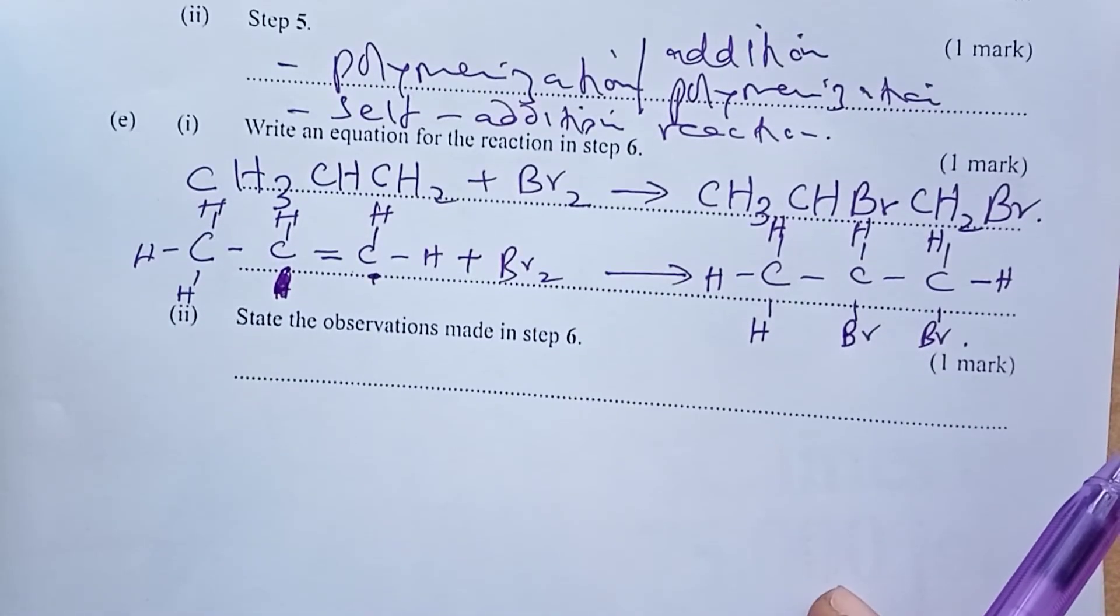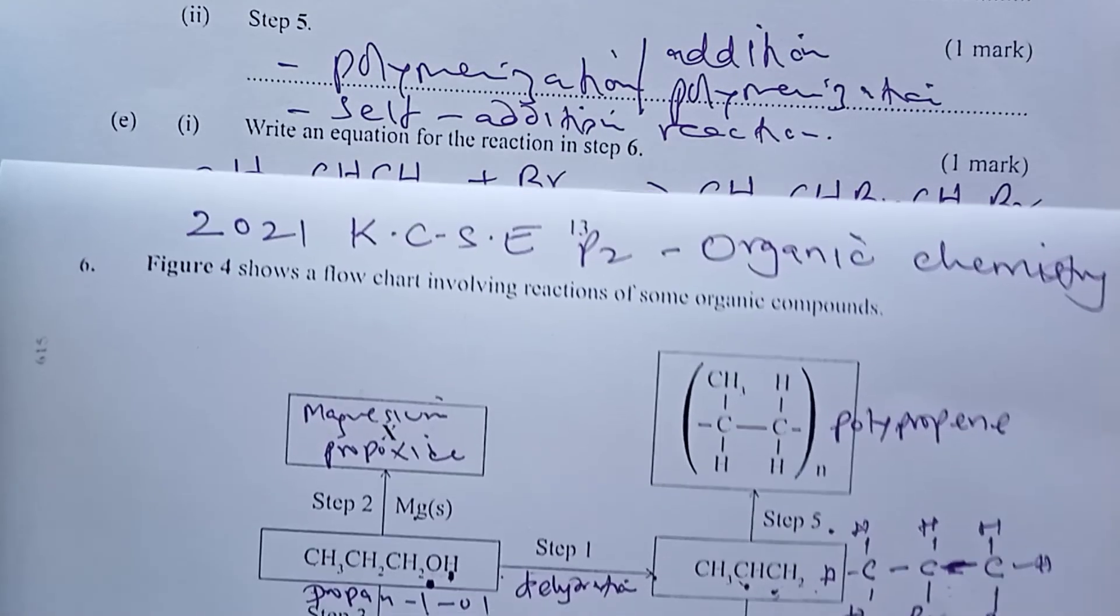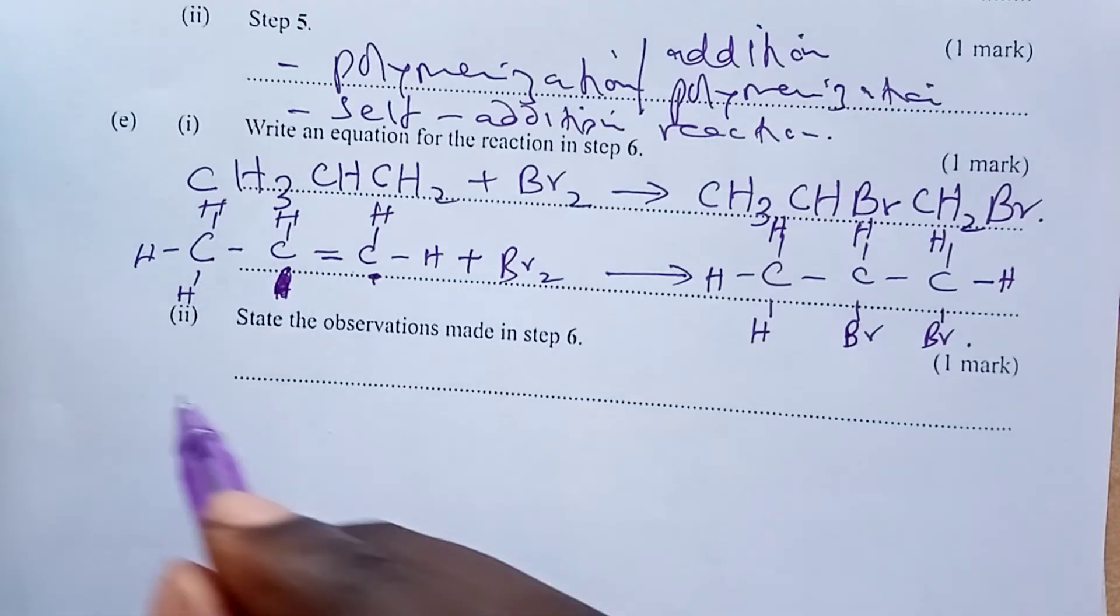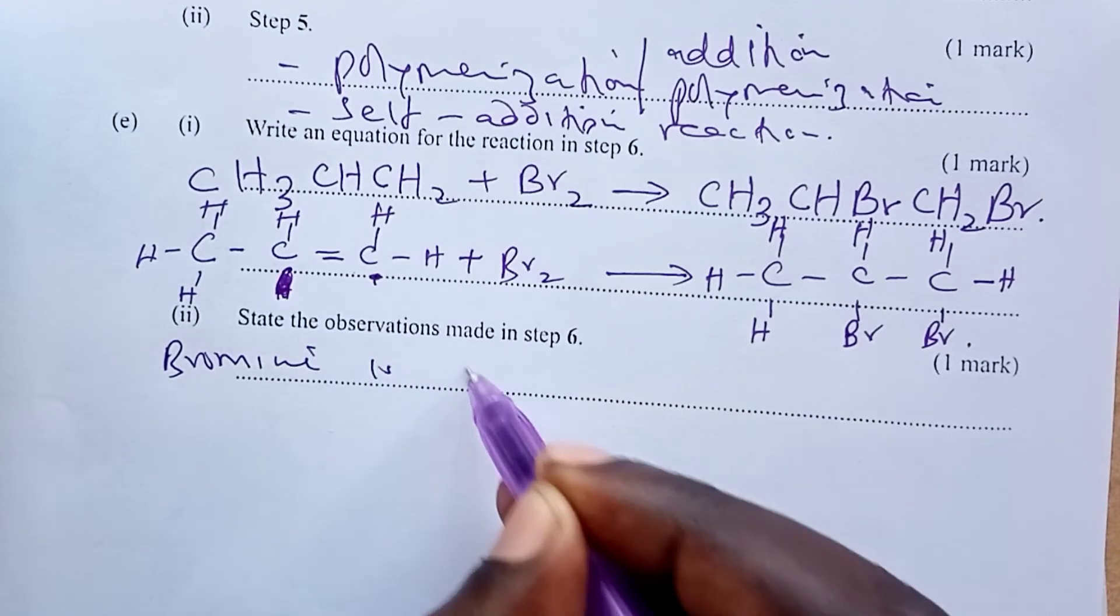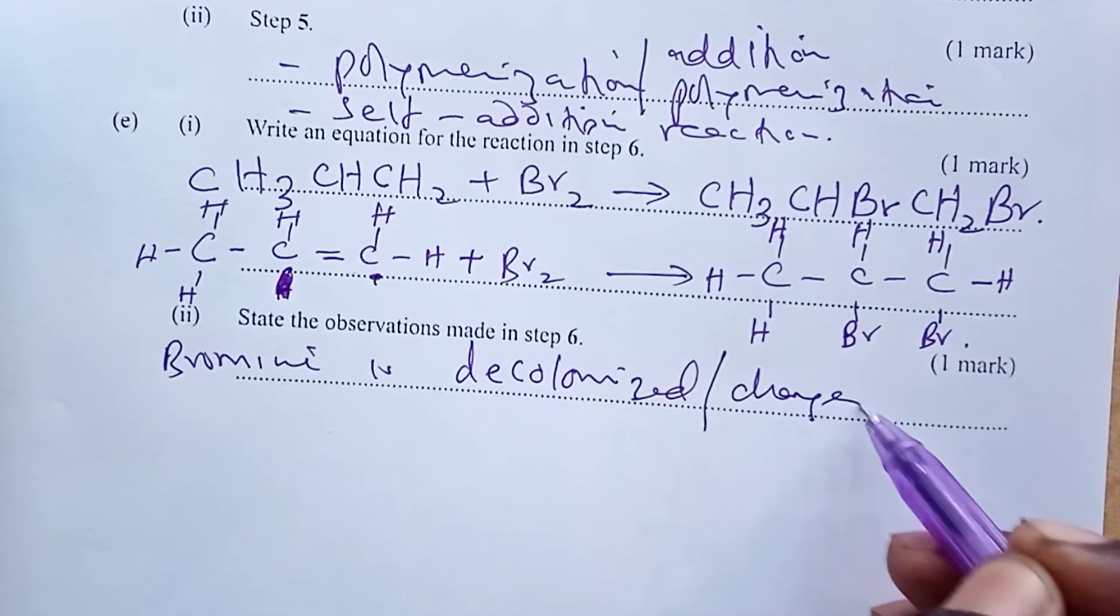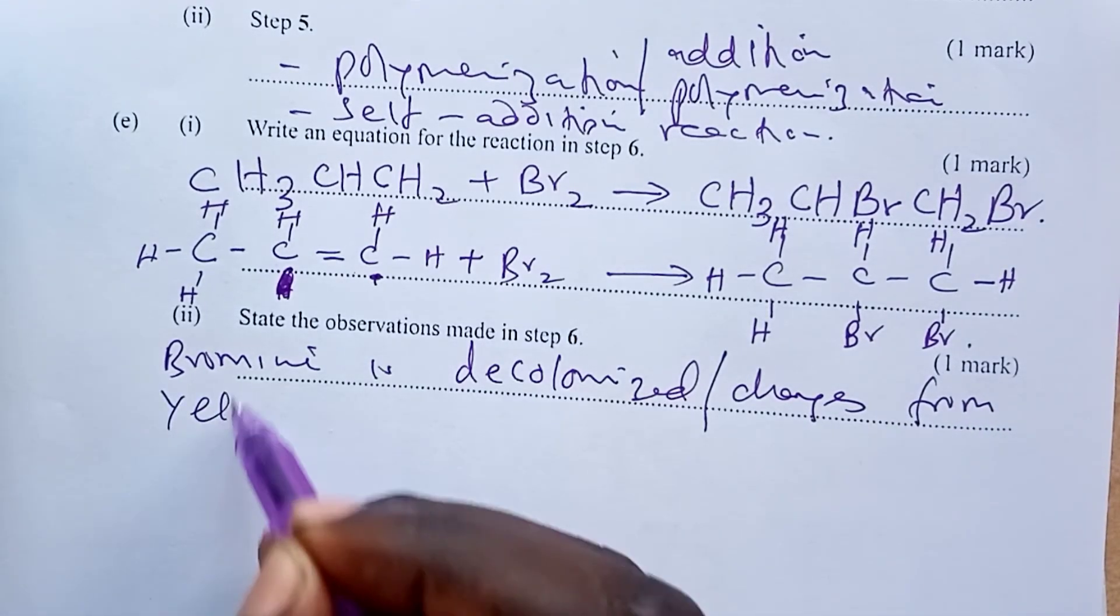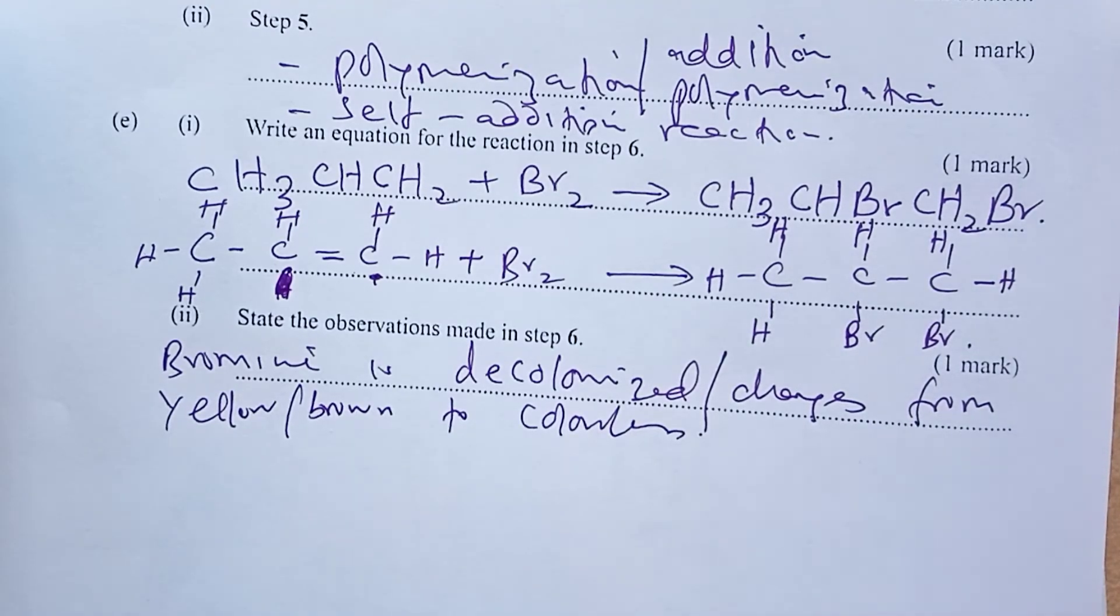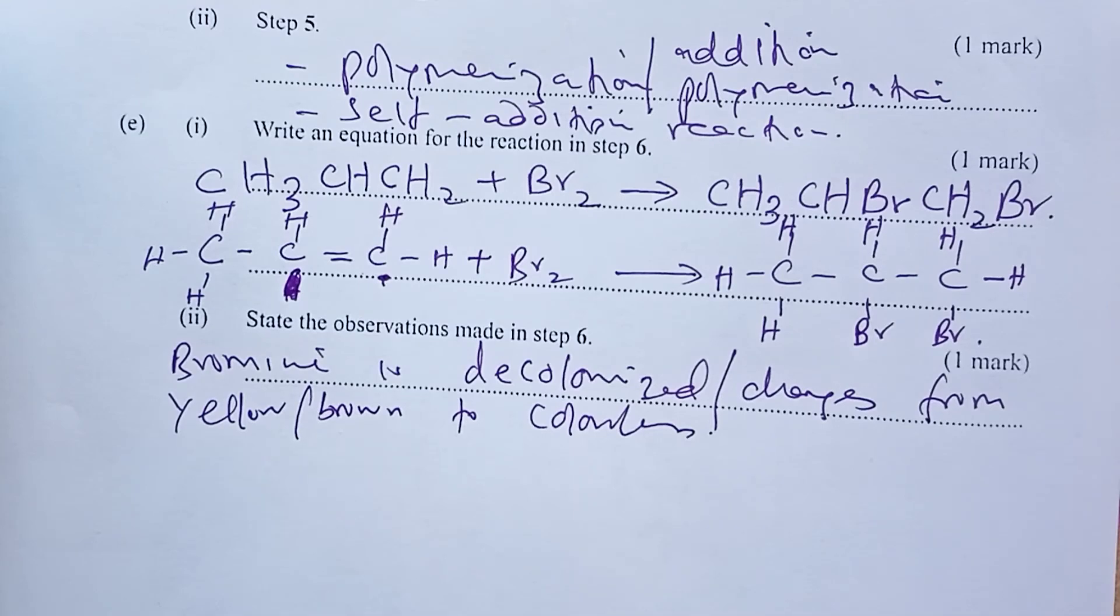Okay, so that would do. Lastly, we were asked to state the observations made in step six. Step six is the same one where we are reacting our alkene with bromine. And you know that the bromine is decolorized, so bromine is decolorized. You could as well talk about the colors, so bromine changes from yellow to colorless. It can be yellow or brown, depending on the concentration, to colorless. That would do for that part. Now, if a student used bromine water, and you write bromine water is decolorized again, we shall give you the mark. Remember, in the scheme, bromine was Br2, which means there would be some elements of bromine water as well.